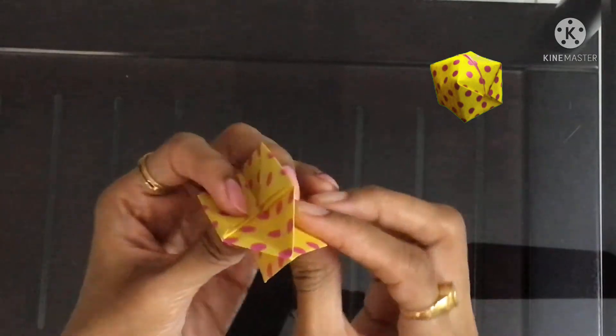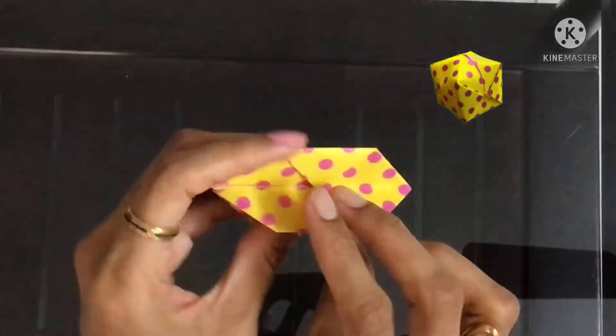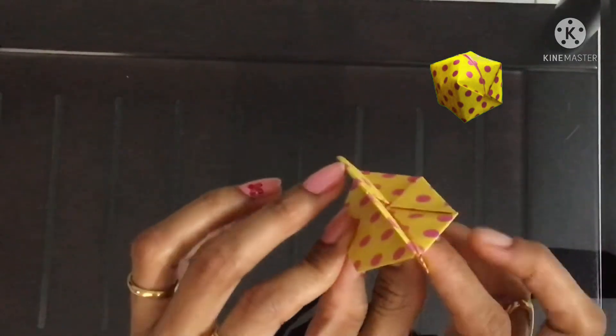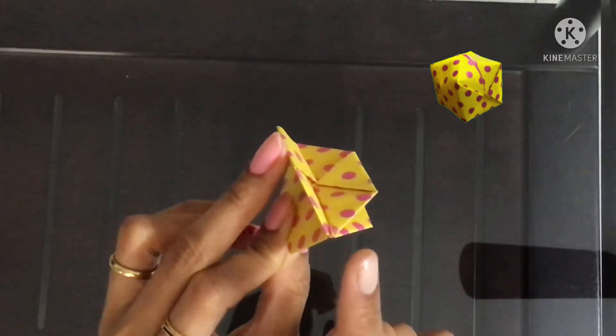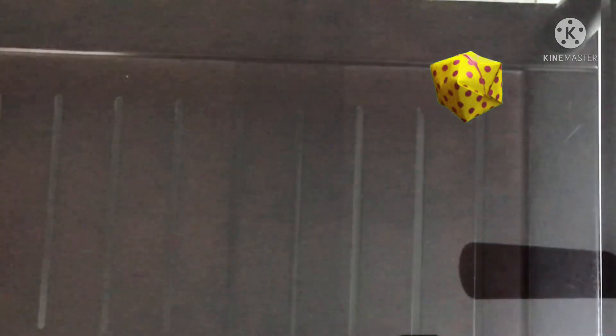Now open the flaps like this. One side is closed and the other side is open. You can find a small hole there, so you can blow there to inflate the balloon.